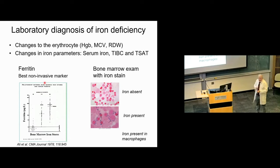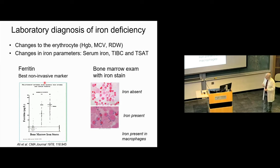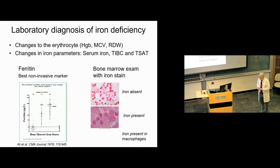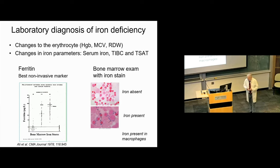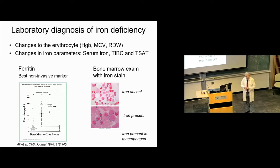The laboratory diagnosis of iron deficiency can be quite straightforward. We think about the parameters — a microcytic anemia, serum iron, TIBC, saturation. Ferritin has been known for almost 50 years to be the best non-invasive marker for iron deficiency. Comparing to bone marrow iron — the gold standard — a low ferritin is very specific for iron deficiency. There's almost nothing else that will give you a low ferritin except iron deficiency anemia. At higher ferritin levels it becomes more murky, and a bone marrow exam would again be the gold standard.